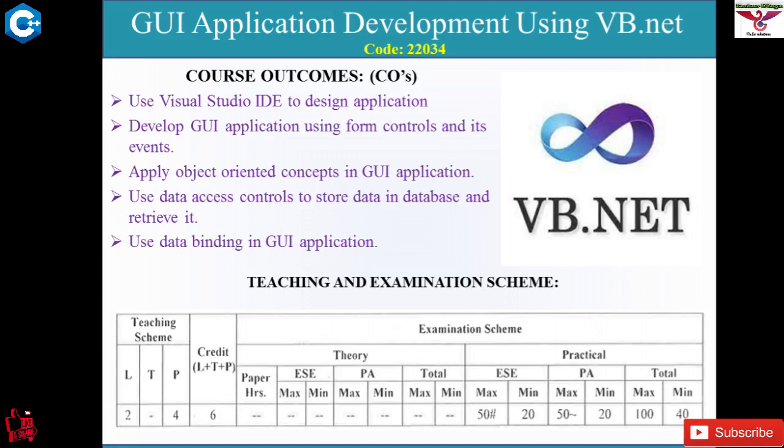The fifth course outcome is to use data binding in GUI applications. When you store data into the database and retrieve it, that data has to be bound with your application. For example, if you retrieve student information from a table, that data should be displayed on the GUI application. How to display database data on the GUI is the fifth course outcome.